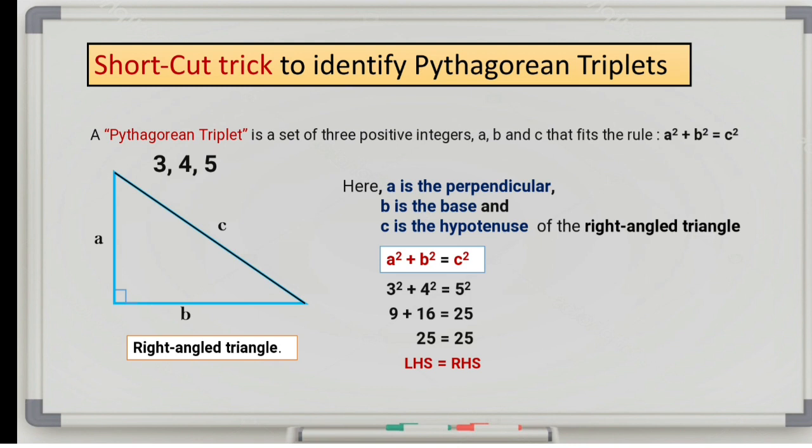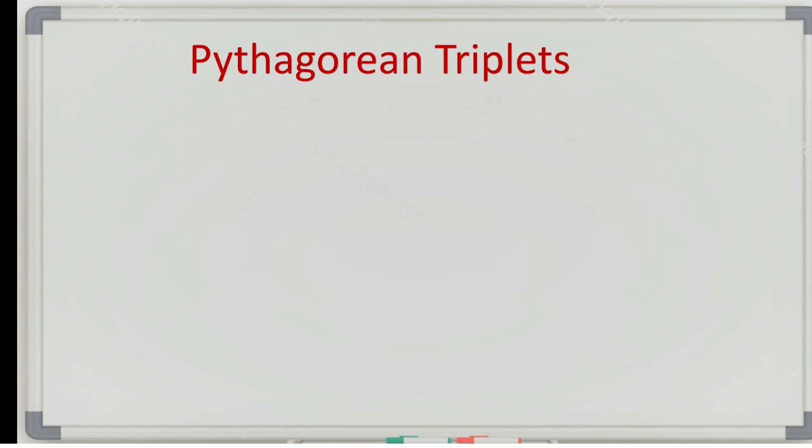Let us see shortcut to remember Pythagorean triplets. The trick is you can multiply this by 2, 3 and then 4. Let us multiply this by 2.